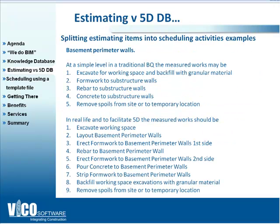Take the example of a basement perimeter wall. A typical detailed takeoff for that wall might have: excavation for working space and backfill as one item, formwork as one item, rebar, concrete, and removing excavated material — five items. But in real life, how it actually happens on site and how the 5D database should be set up for scheduling would be: excavate the working space, lay out the walls, erect formwork first side, put in rebar, close formwork on second side, pour concrete, strip formwork, do backfill, then remove spoils. So there are actually nine items as opposed to a typical five.